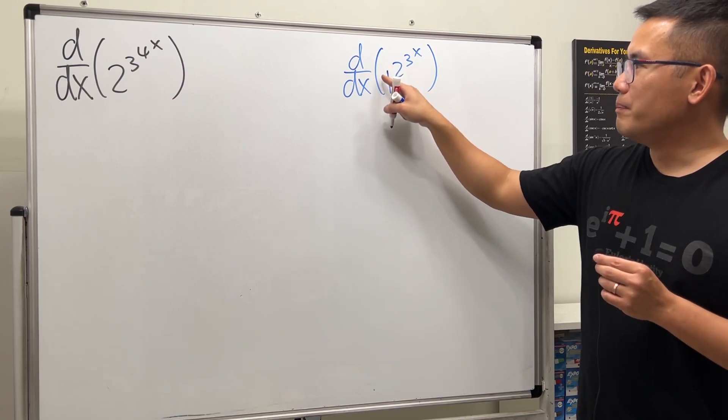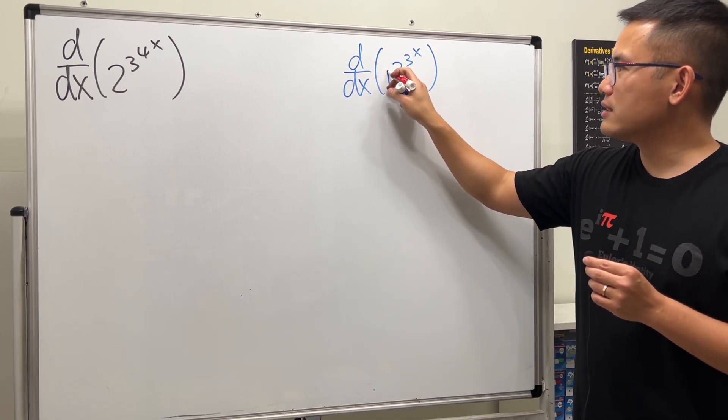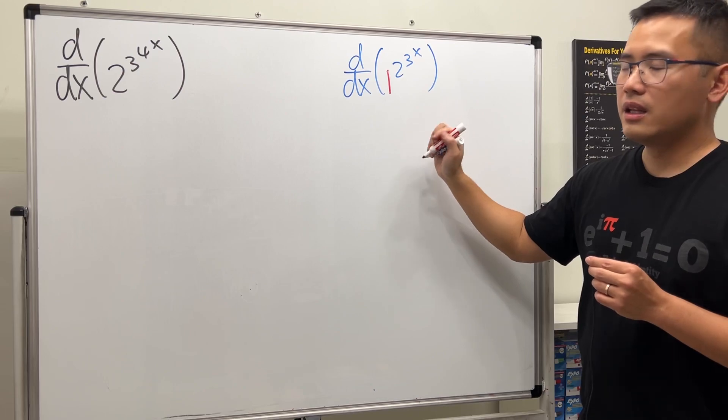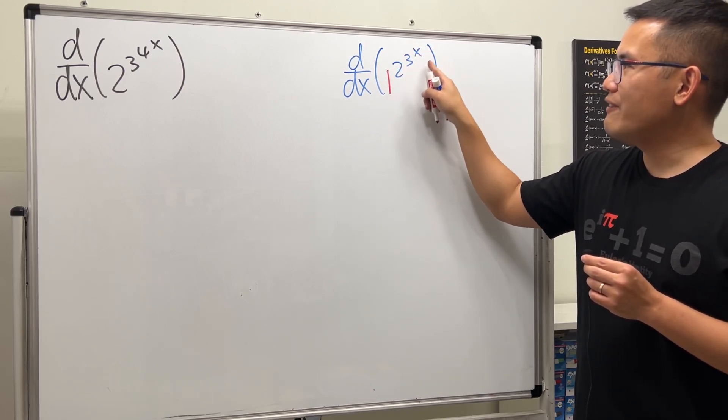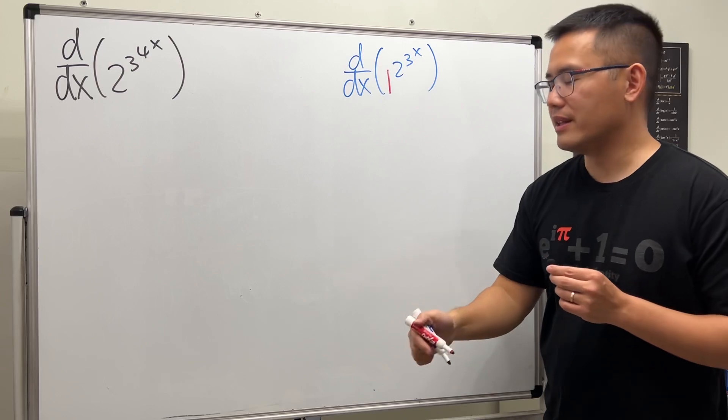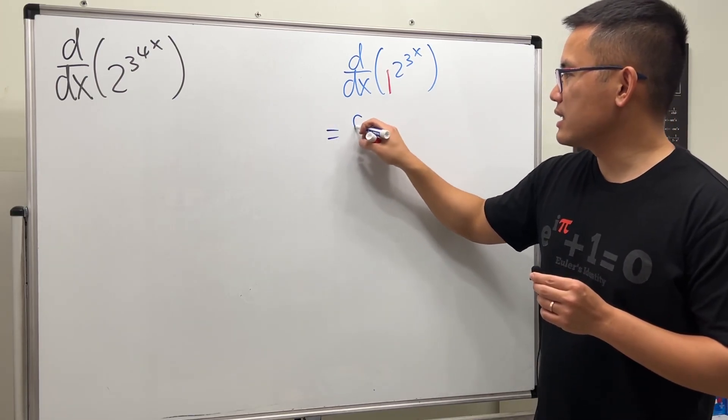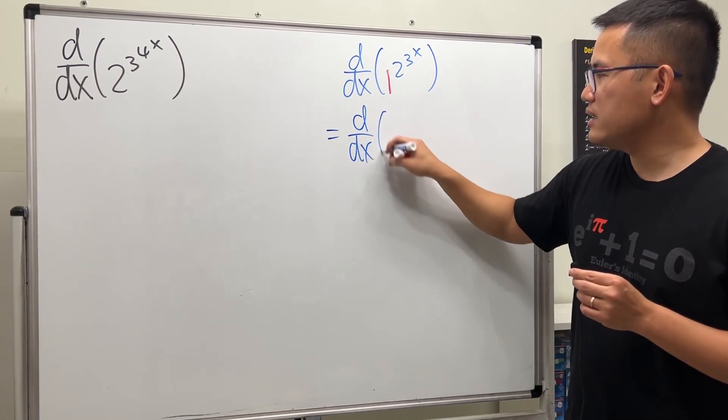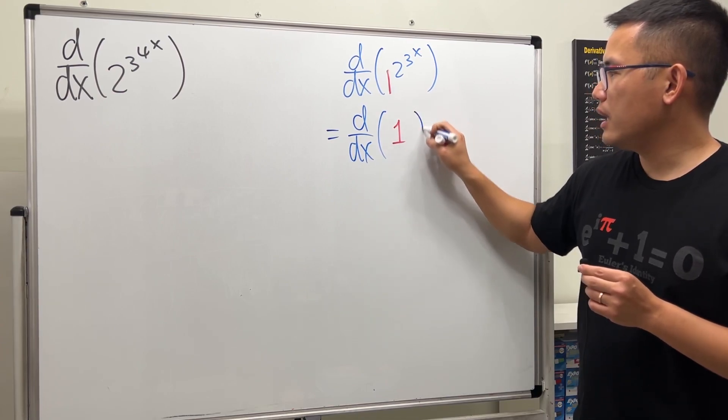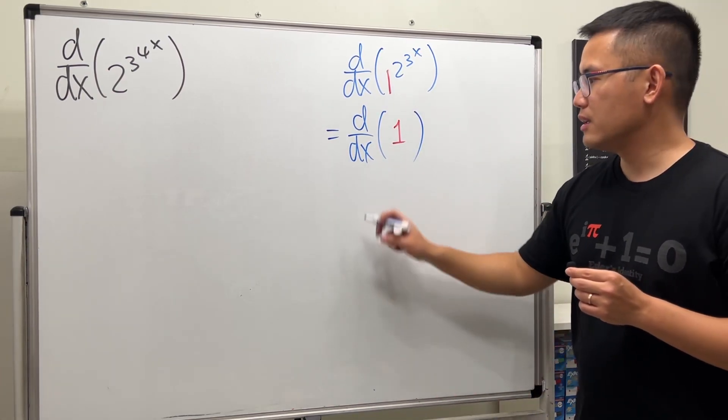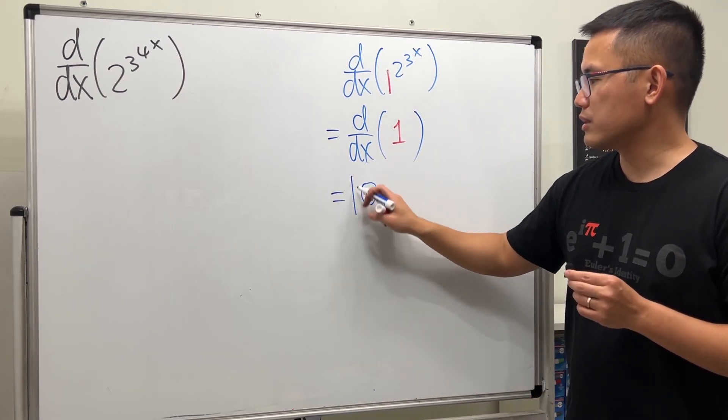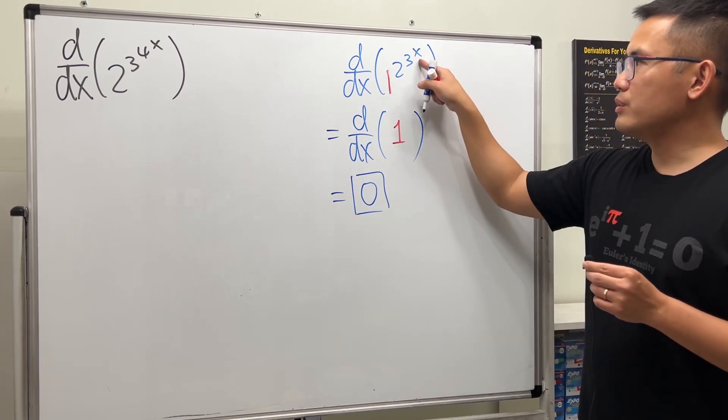Take a look right here. The base here is just a solid one, and then when you have 1 to the whatever power here, it's always just going to be 1. So in fact, this is just asking you to differentiate the number 1.